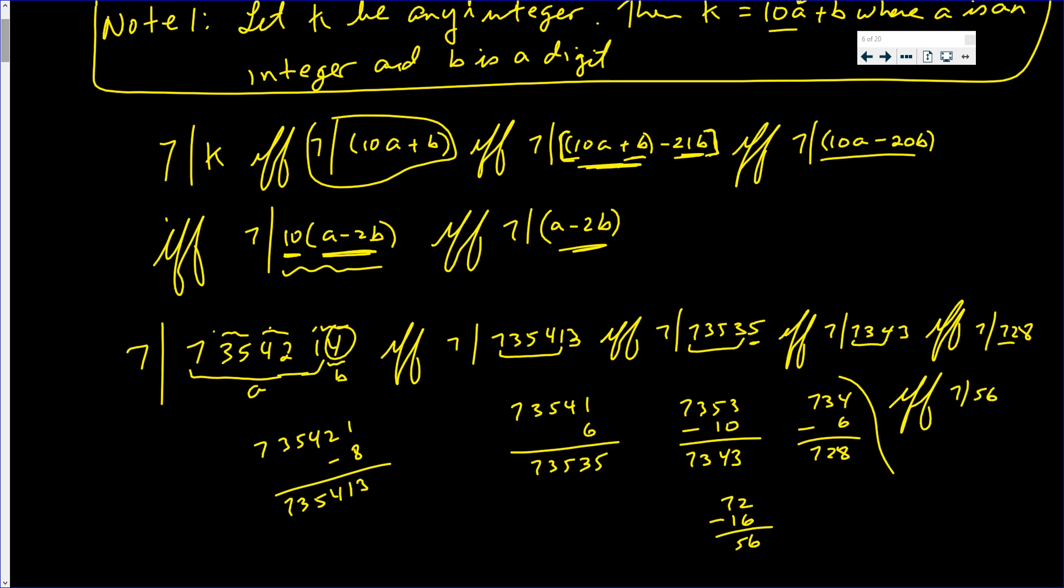If and only if 7 goes into 56, and you should know 7 times 8 is 56. But if you want to say you don't, fine. If you take 5 and you take away 2 sixes, which is 12, which is negative 7. And 7 actually goes in there. 7 goes into negative 7 negative 1 times. So the answer is yes.